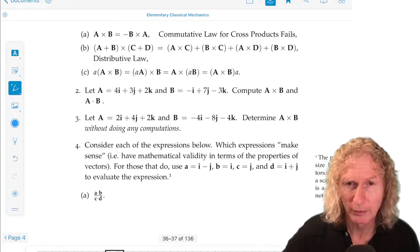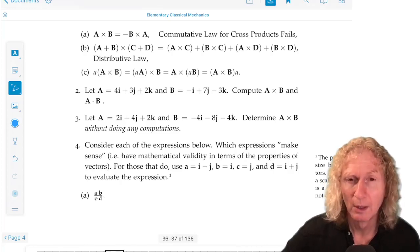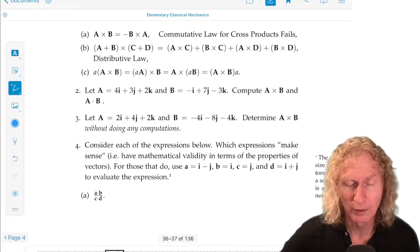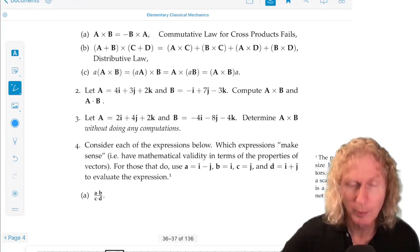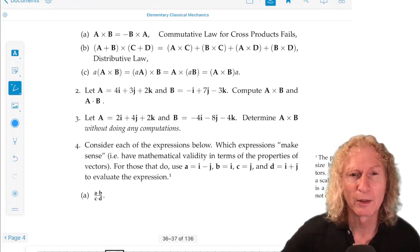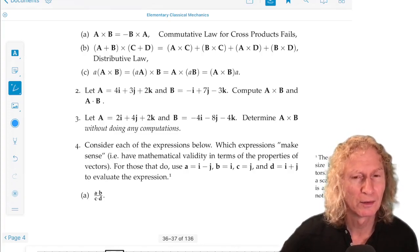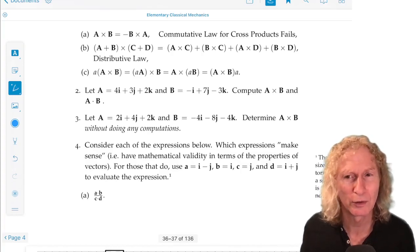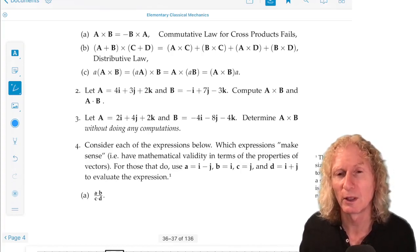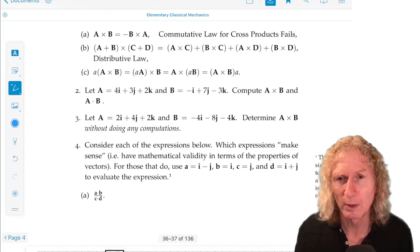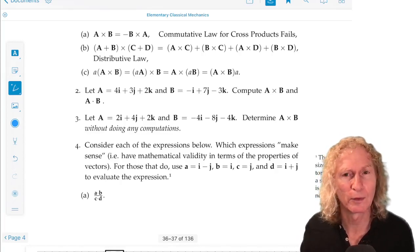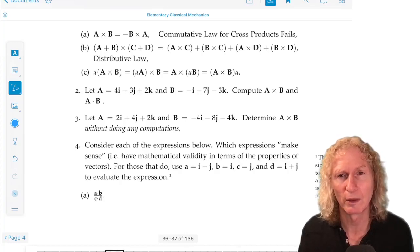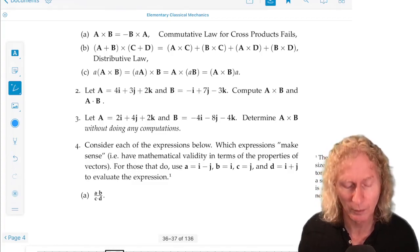Then problem 3, similarly, I give you two explicit vectors, and I ask you to determine A cross B without doing any calculations. So whenever you're given a problem that's stated like that, you know there's a trick involved. So you need to think about what does cross product mean, and under what circumstances would the cross product of two vectors be 0, and then do these two vectors satisfy those circumstances?